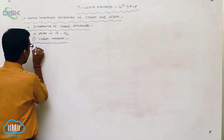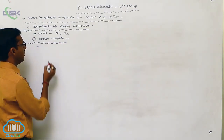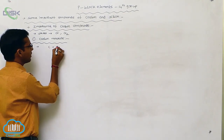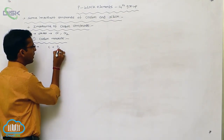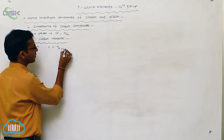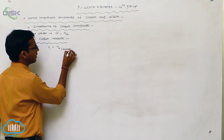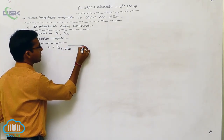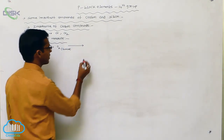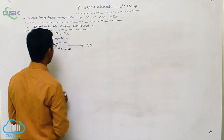Carbon monoxide is prepared when carbon is heated with a limited amount of oxygen — it is heated in terms of a limited amount of oxygen, and it forms carbon monoxide.